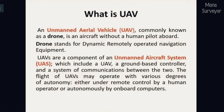The unmanned aircraft system includes a ground-based controller and a system of communication between the two. On the ground you will have a separate ADS-B and a separate base station, which communicates between the drone and ground. The drone has GPS, a gimbal camera, and collects IMU data and timestamps. The total setup is known as the unmanned aircraft system.